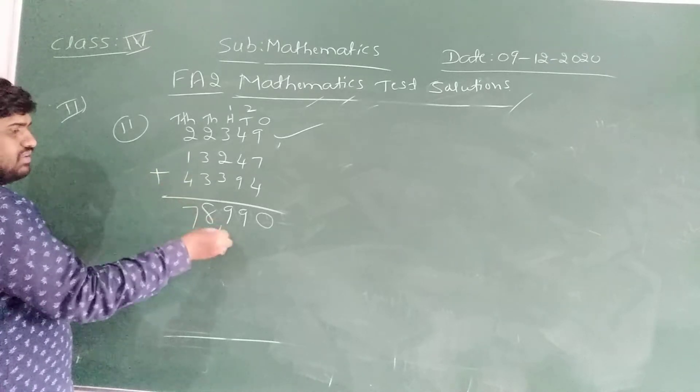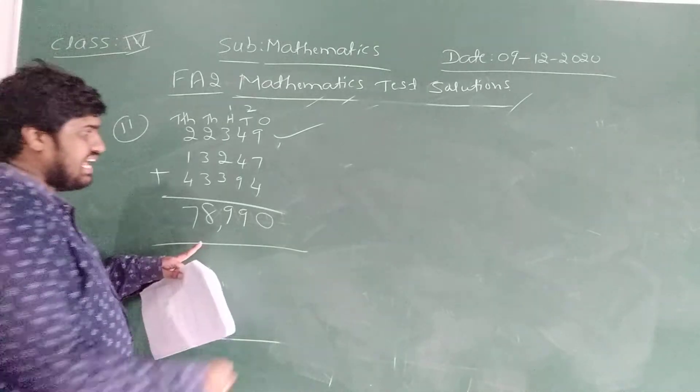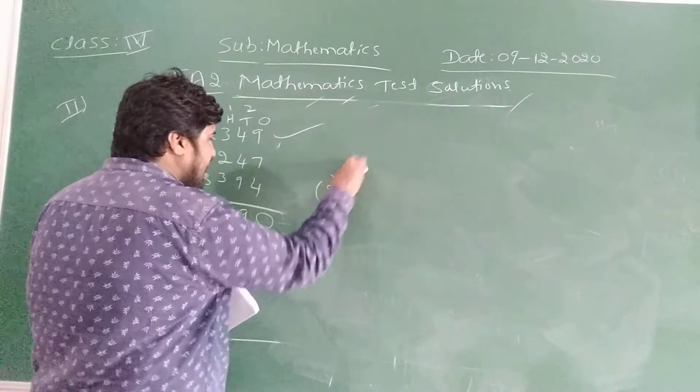2 plus 1 is 3. 3 plus 4, 7. Answer is 78,990. If you write like this, I am going to give you 2 marks.